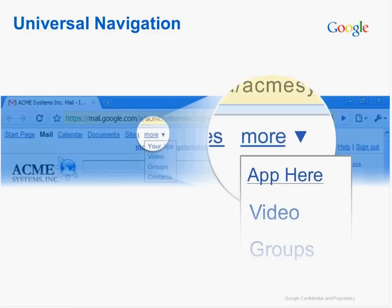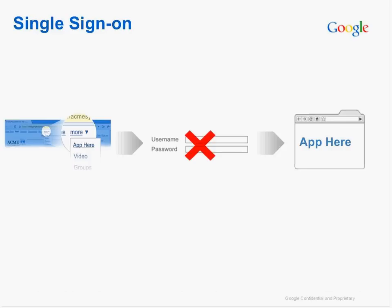The Marketplace provides central management — your app sits right next to your email, calendar, and docs. You can disable, enable, and control data permissions for each app, giving you full systemized control for your domain. There's also access to the universal navigation bar, so just like switching from Gmail to Google Calendar, you can go from Gmail to BrainPop with one click, without signing in again.